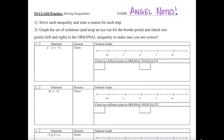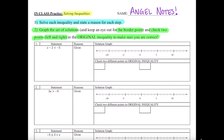Let's quickly talk about what it means to solve an inequality. The directions ask us to solve each inequality and state a reason for each step. After that, we're going to graph the set of solutions, keeping an eye out for the border point, and then check two points — one to the left and one to the right in the original — to make sure that we are correct. Let's take a look at our first one.